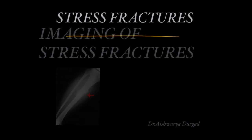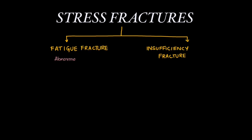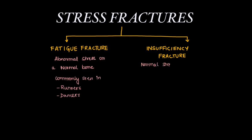Let's learn about imaging and stress fractures. Stress fractures are of two types: fatigue fractures and insufficiency fractures. Fatigue fracture is when abnormal stress is laid on a normal bone, commonly seen in runners and dancers. Insufficiency fracture is when normal stress is laid on an abnormal bone.